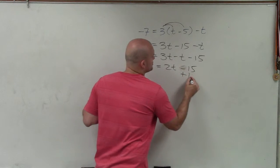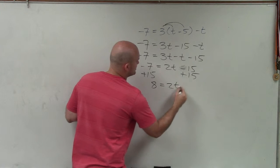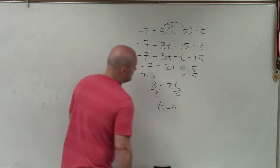So I'll undo subtracting 15 on both sides by adding 15 on both sides. I get a positive 8 equals 2t, divide by 2, divide by 2, t equals 4.